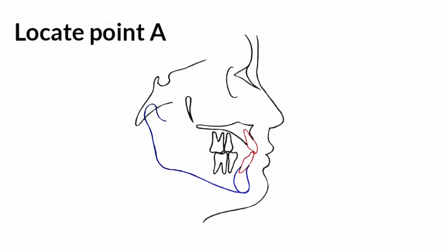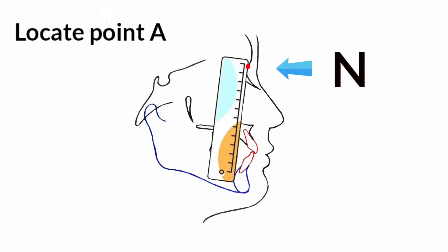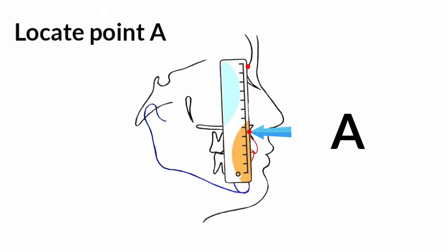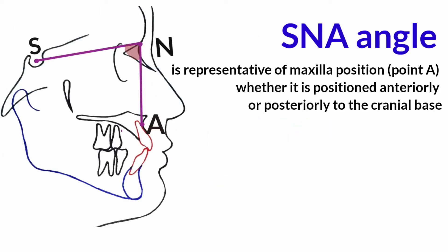To locate point A, we can fix the ruler on point N and move it forward until it touches the contour of the premaxilla, and mark a point there. The SNA angle is representative of the maxilla's position, whether it is positioned anteriorly or posteriorly relative to the cranial base.